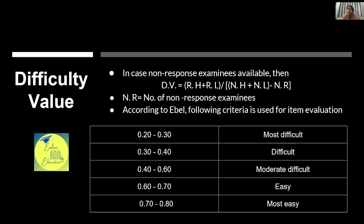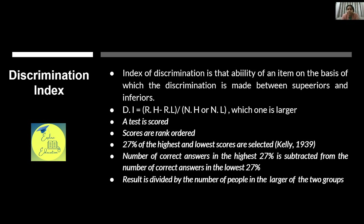We want to assess how much students have learned, so we should give them appropriate difficulty. Discrimination index refers to the ability of an item to discriminate between high achievers (superiors) and low achievers (inferiors). If an examination can't distinguish between someone who studied and someone who didn't, it has no relevance. Discrimination index is defined as the ability of an item on the basis of which discrimination is made between superiors and inferiors.